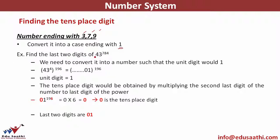Let's look at an example: find the last two digits of 43 raised to power 784. We need to convert it into a number such that the unit digit ends with 1. I'll keep 4 inside and 196 outside — the power 784 has been split as 4 into 196 — because 3 raised to power 4 ends up in 1. So I find 43 raised to power 4, which ends up in 1. The last two digits of 43 raised to power 4 raised to power 196 — now it's already converted into a form ending with 1. The unit digit would be 1.